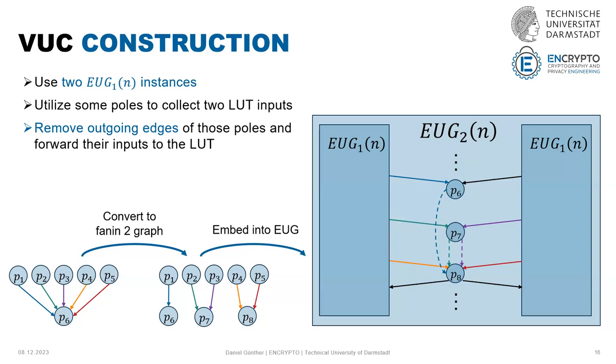In the end, this last pole gets all five inputs and here we can implement the lookup table.